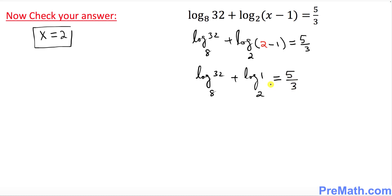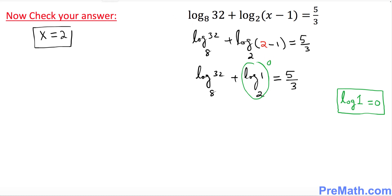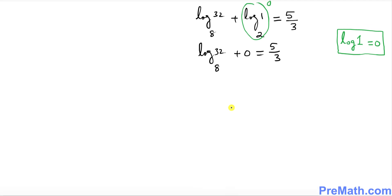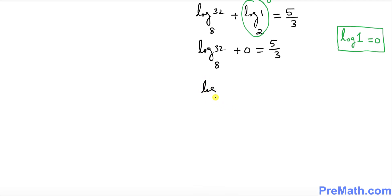Keep in mind that log of 1 is always 0, regardless of the base. So log_2(1) = 0, and the expression becomes log_8(32) plus 0, which must equal 5 over 3. So we need log_8(32) = 5 over 3.